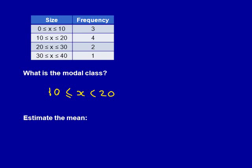So now we're going to move on to estimating the mean. This is the one that carries the most marks, but the process is always the same. We always start by adding an extra column called the midpoints, MP.